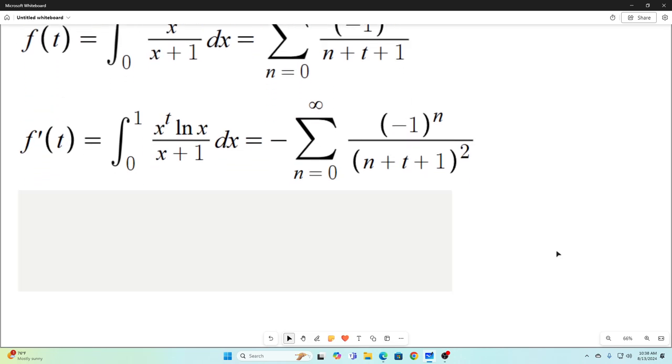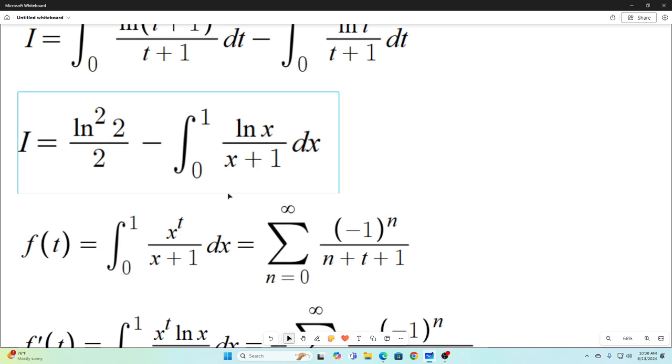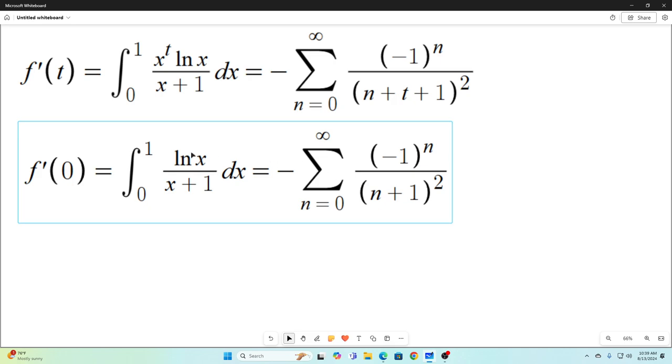Now, if we evaluate f prime at zero, notice we get this integral, which is exactly what we're trying to find. Okay, so the value of this is equal to this evaluated at t is equal to zero. So these two things, these three things are equivalent. All right.